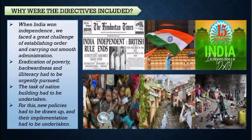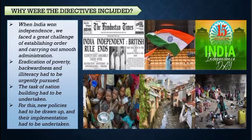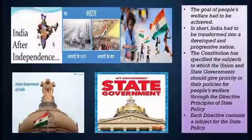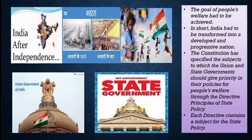Policies have been planned and implementation is taking place, but how much these implementations are working also needs to be taken into consideration. That was the work of the constitution — to see that whatever policies are being implemented are being followed by the state and citizens. New policies had to be drawn up and their implementation had to be undertaken. The main aim was to find people's welfare, and that was the goal set by the Indian constitution and government.